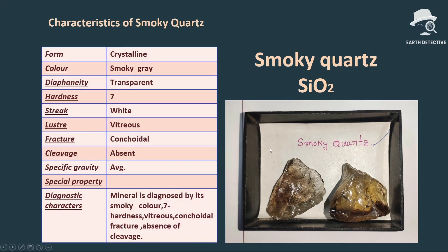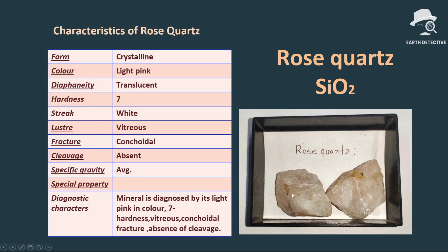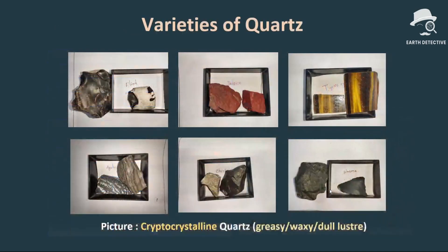Smoky quartz can be diagnosed by its smoky gray color, crystalline form, hardness seven, vitreous luster, conchoidal fracture, and absence of cleavage. Rose quartz is a light pink variety, diagnosed by its hardness seven, vitreous luster, conchoidal fracture, absence of cleavage, and especially its light pink color. Its diaphaneity is translucent.